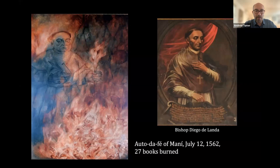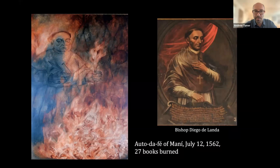This is of course a horrible travesty. Out of what was hundreds or thousands of books made over probably 1,500 to 2,000 years, now only three survive. Those are found in collections in Dresden, Madrid, and Paris, and all these books were probably made shortly before the arrival of the Spanish. It's not really clear how they left Mexico, but they're probably made somewhere in the Yucatan Peninsula.